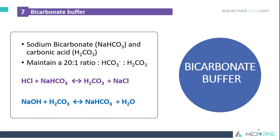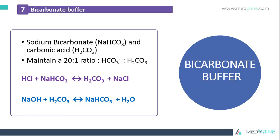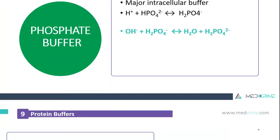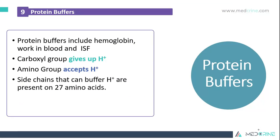Starting with the bicarbonate buffer, sodium bicarbonate and carbonic acid are the main components, maintaining a ratio of carbonic acid to sodium bicarbonate of 20 to 1. The phosphate buffer is the major intracellular buffer. Protein buffers include hemoglobin, which works in the blood and interstitial fluid. The carboxyl group gives up hydrogen ions, and the amino group accepts hydrogen ions, and side chains that can buffer hydrogen ions are present in all 27 amino acids.